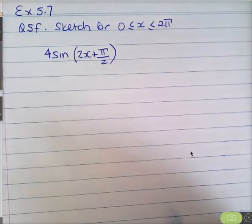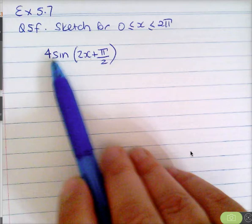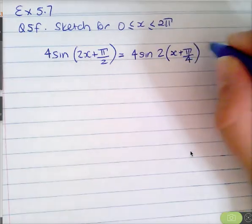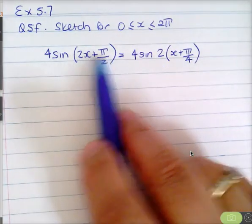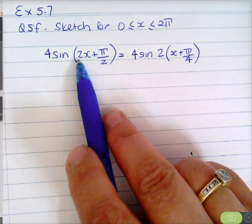With this question you'll notice that you've got 4 sine in brackets 2x plus π on 2. Now you have to rearrange that — we'll make it 4 sine, take the 2 out as a common factor: x plus, so we've got 2x plus, and to get π on 2 I'd need to multiply by π on 4. You cannot sketch it this way where the coefficient of x is anything but 1. If the coefficient of x is 2 you need to take it out the front.